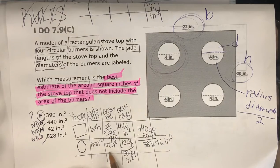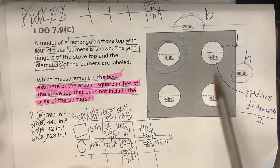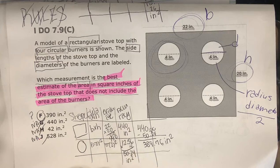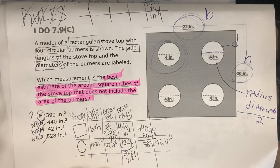But remember, that's the area of one of the circles. It says that there's four circles. So 12.56 multiplied by 4 is 50.24 inches squared.